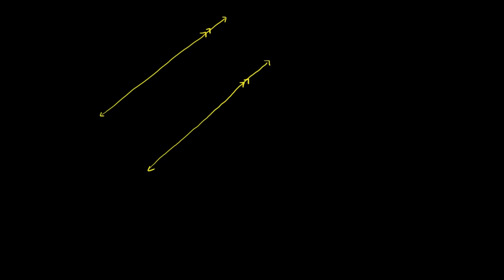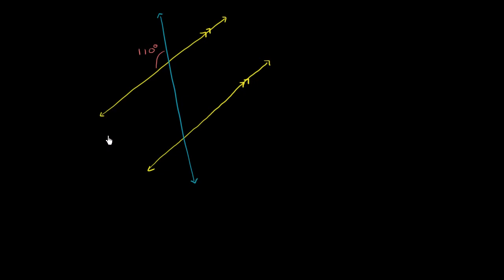And then let me draw a transversal here. This is also a line. Now let's say that we know that this angle right over here is 110 degrees. What other angles can we figure out here?